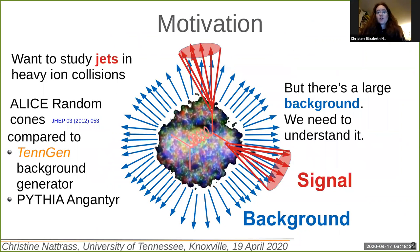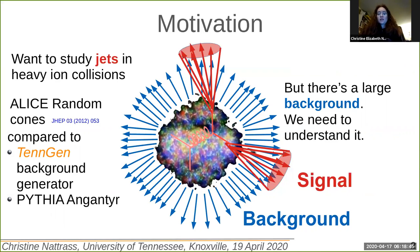We want to study jets in heavy ion collisions, but there's a large background. So to make precision measurements, we need to understand this background. The ALICE experiment did a measurement of random cones drawn in different orientations in the event, and we're going to be comparing to that using the TennGen event generator developed here at the University of Tennessee Knoxville and Pythia-Angantyr.